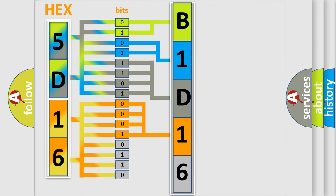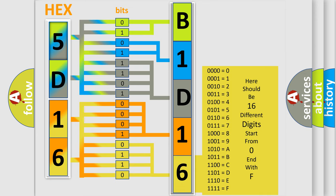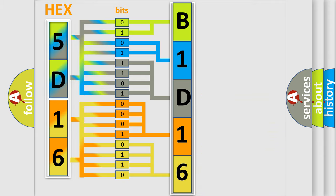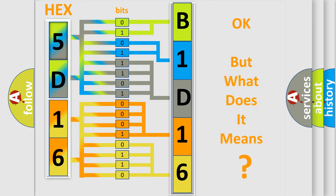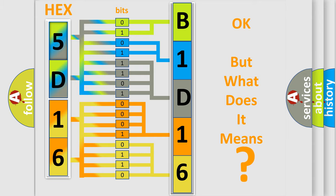A single byte conceals 256 possible combinations. We now know in what way the diagnostic tool translates the received information into a more comprehensible format. The number itself does not make sense if we cannot assign meaning to what it actually expresses. So, what does the diagnostic trouble code B1D16 interpret specifically for Dodge car manufacturers?